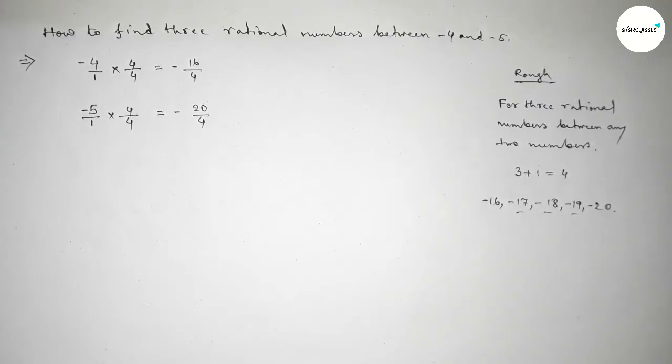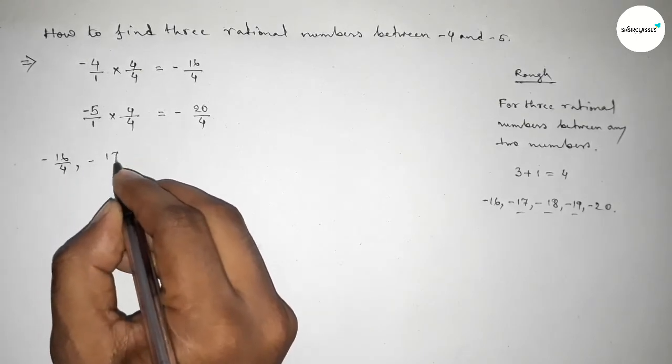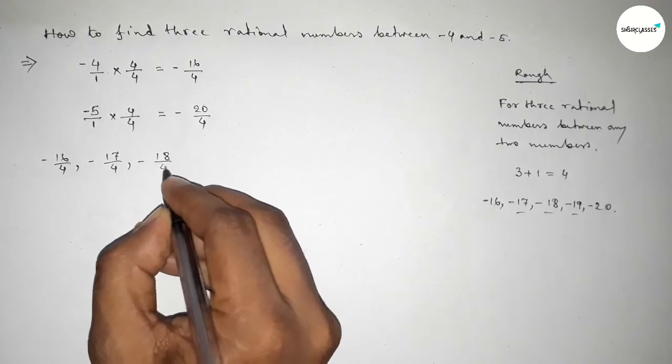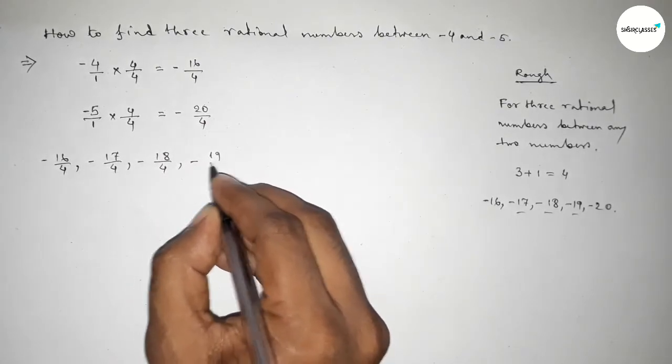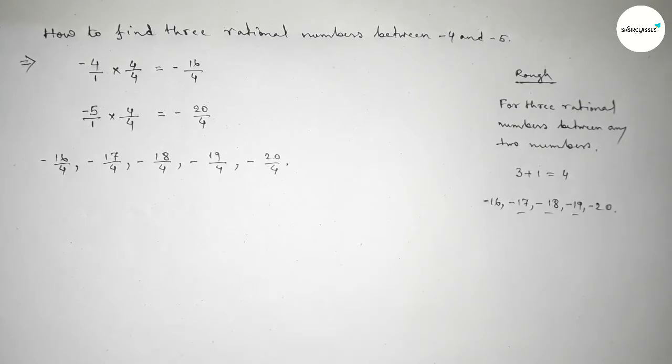Now forming all the rational numbers here. So first one: -16/4, -17/4, -18/4, -19/4, and -20/4. Among these, these are the required three rational numbers.